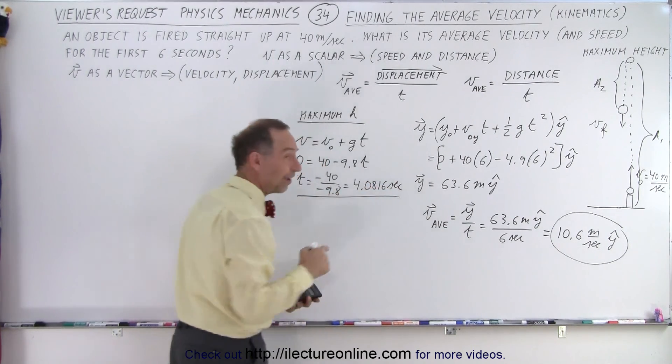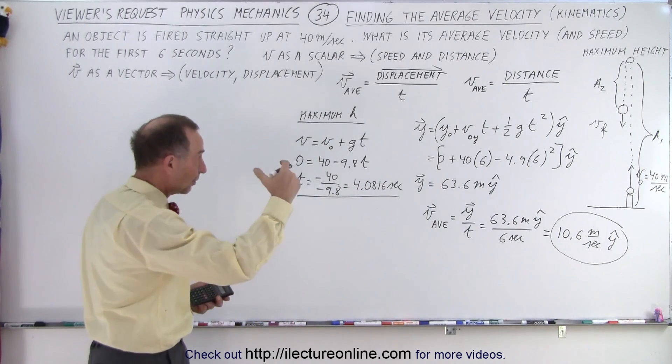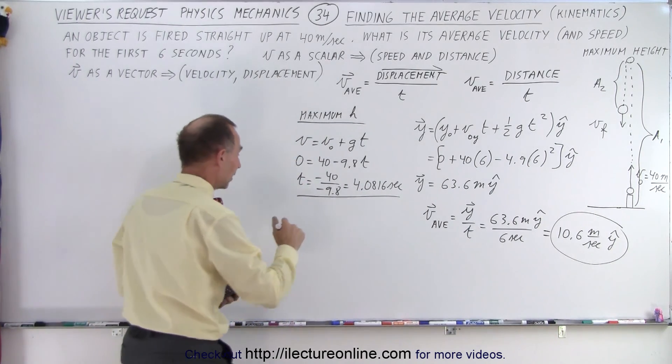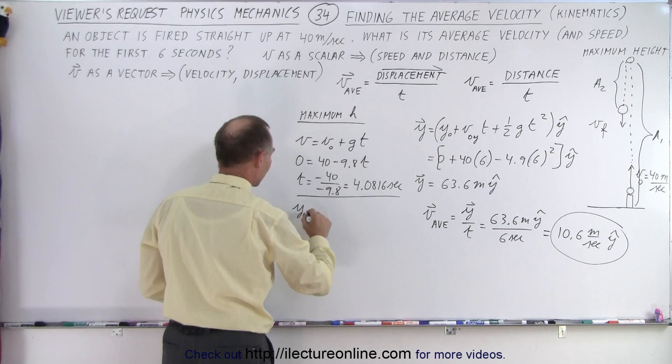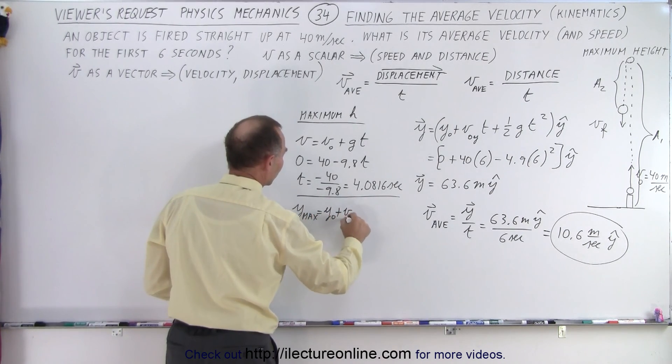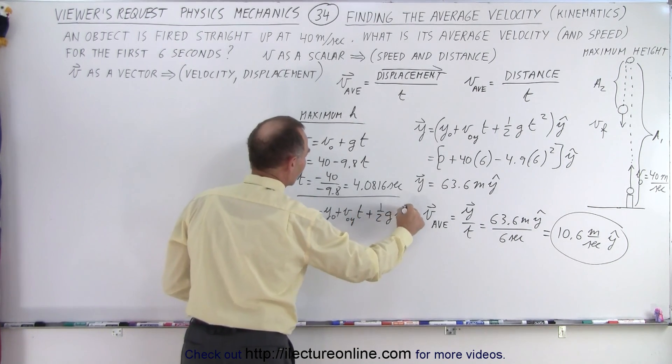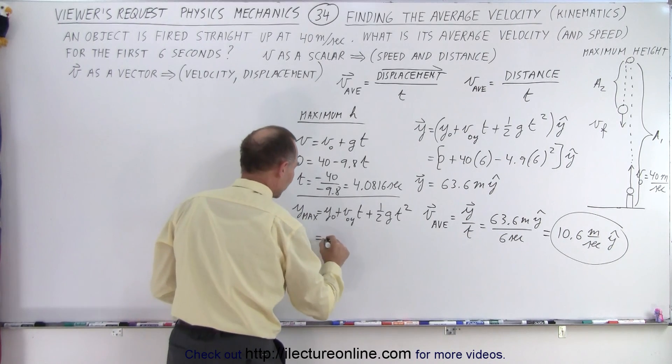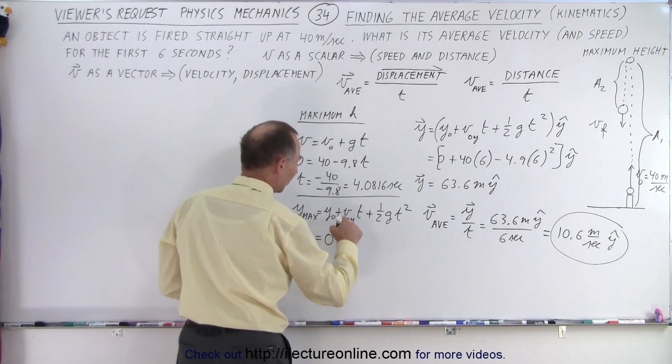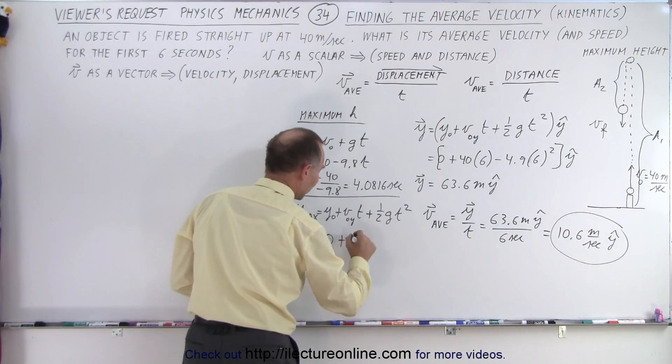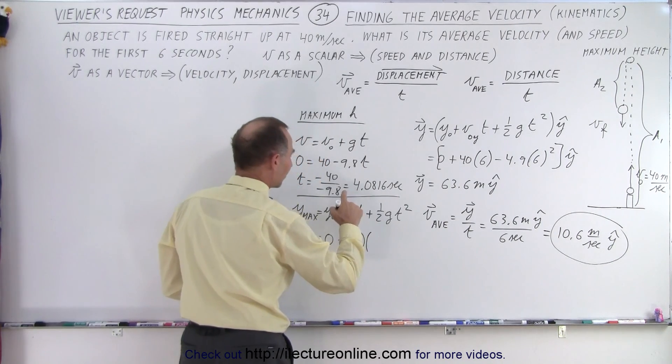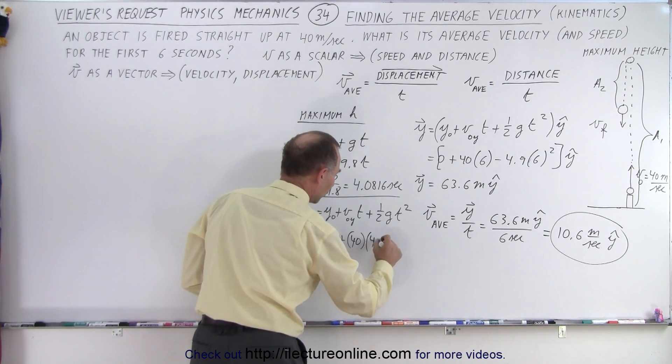So now we can use this time that it takes to get to the maximum height to find the actual maximum height. So y max is equal to y initial plus v initial in the y direction times time, plus one half g t squared. So we know that we start from the ground, so that's zero, plus v initial in the y direction, which is 40 times the time to get to the maximum height, 4.0816.